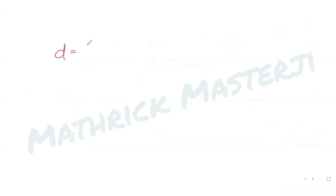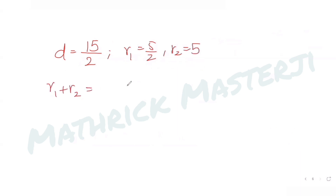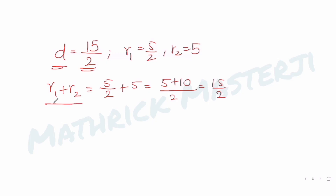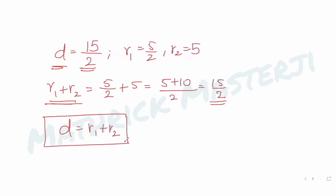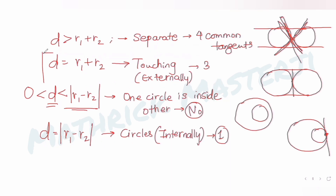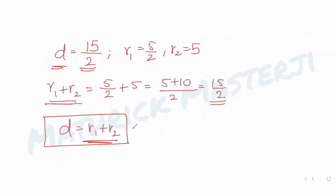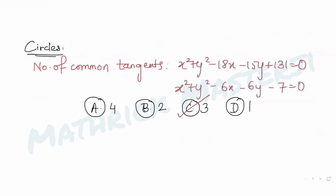The distance between the two centers is 15/2. The first radius is 5/2 and the second radius is 5. The sum r1 + r2 = 5/2 + 5 = 15/2. Since the distance equals r1 + r2, the circles touch each other externally, giving us 3 common tangents. The answer is option C.